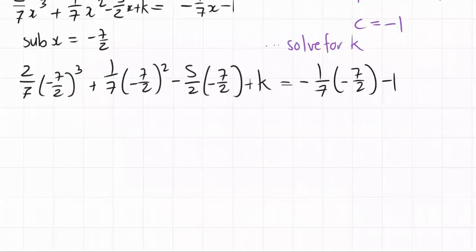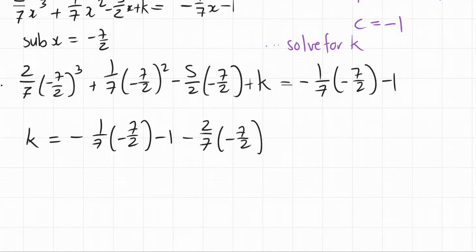I'm gonna rely heavily on my calculator for this one, but let's first put everything. We want k on one side. We would be putting this into the calculator: one over seven minus seven over two minus one, then we minus 2 over 7 times negative seven over two, minus 1 over 7, negative seven over two squared, minus 5 over 2. Check all those double negatives. And that fantastic piece of work is k, which comes to a nice neat number of five over four.